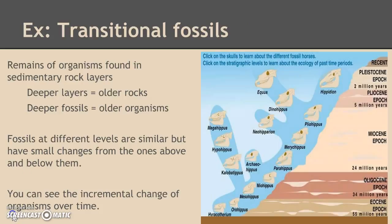Here is my example. I chose to use transitional fossils as a piece of evidence for evolution over time. Generally, I have a picture on the right, and then my general description or overview says that the remains of organisms are found in sedimentary rock layers. The deeper the layer of rock, the older it is, and therefore the deeper the fossils are in the ground, the older the organisms are. What this tells us about transitional fossils is that fossils at different levels are going to be similar but have small changes from the ones above or below them, or from later or earlier in time. So seeing these transitional fossils, you can see the incremental change of organisms over time.